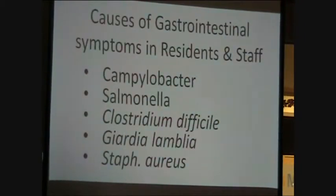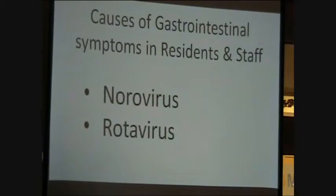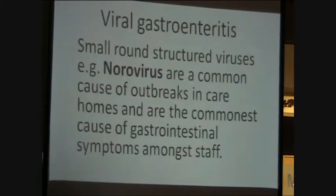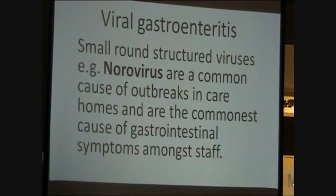There are several germs that can cause residents to have diarrhea and vomiting. These include campylobacter, salmonella, clostridium difficile, giardia, staphoria, and rotavirus. However, the most common cause is norovirus. Small round structured viruses such as norovirus are a common cause of outbreaks in care homes and are the commonest cause of gastrointestinal symptoms amongst staff.